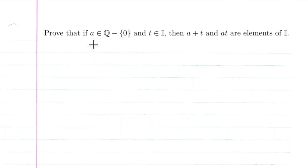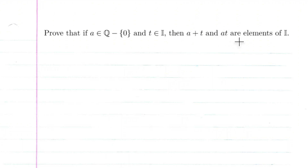We're going to prove that if A is a rational number that's not zero, and T is an irrational number, then the sum of these two numbers and the product of these two numbers are irrational.